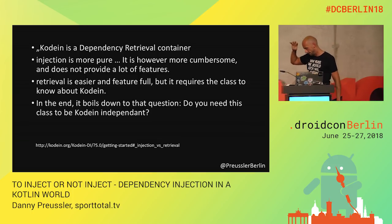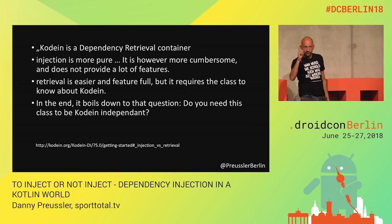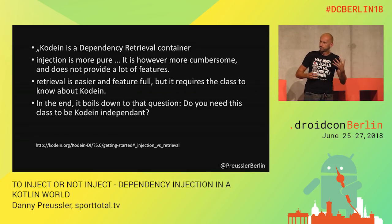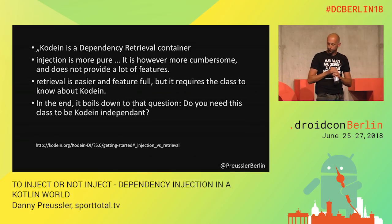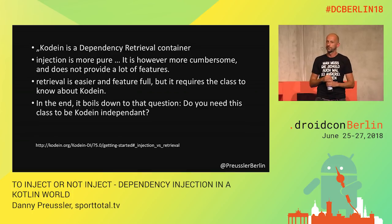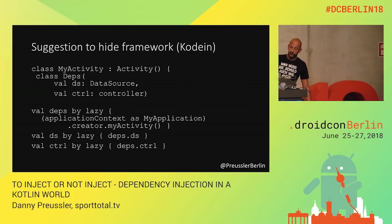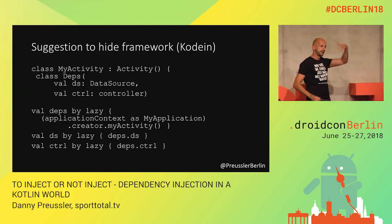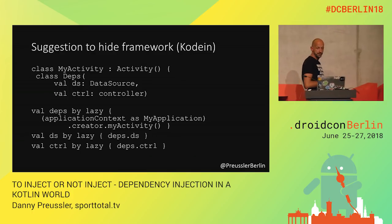Koin actually has an FAQ about this because it's a hot topic. They say: 'We are not dependency injection, but we are not a service locator — we are a dependency retrieval container.' They found a new term. Injection is more pure — totally clear — but there are fewer features; retrieval is much easier, but requires the class to know about Koin. In the end, it boils down to: do you need this class to be Koin-independent? They also show you can wrap the 'by koin' thing with a lazy delegate to make it replaceable — it is more code, so it's not as elegant, but they show the way.